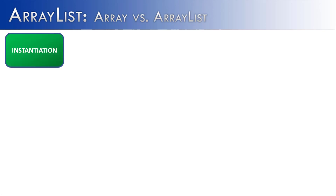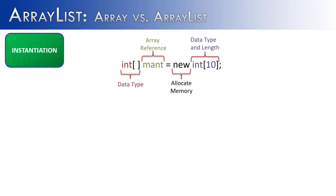Let's start talking about the differences between an array and an array list by starting at the beginning — creation, or instantiation. An array is created like this: you have the data type, the reference, new allocating memory, and the data type again with the length of the array.